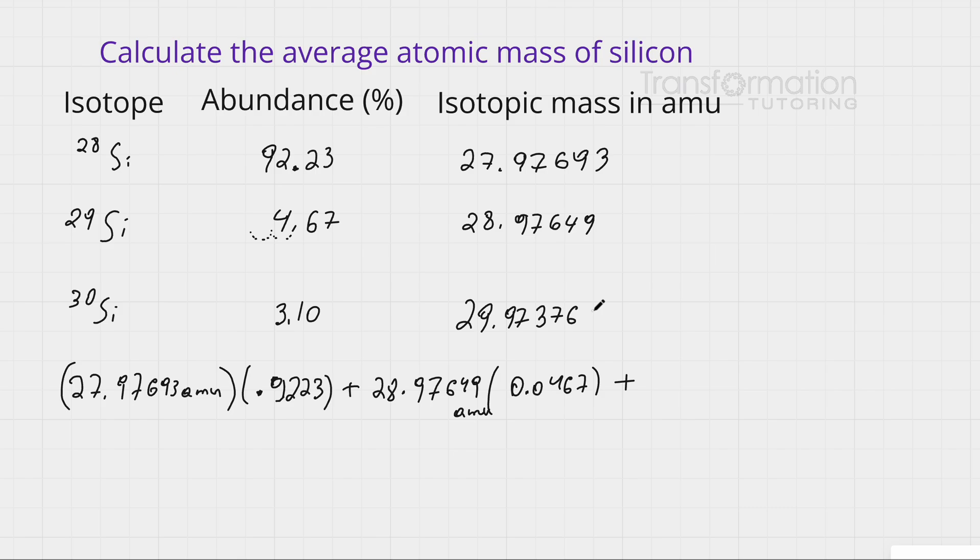Then I do the same thing for my final isotope: 29.97376 amu times—and again I bring it two decimal places to the left—0.0310. Once you plug it into your calculator, let's see what the answer should be.